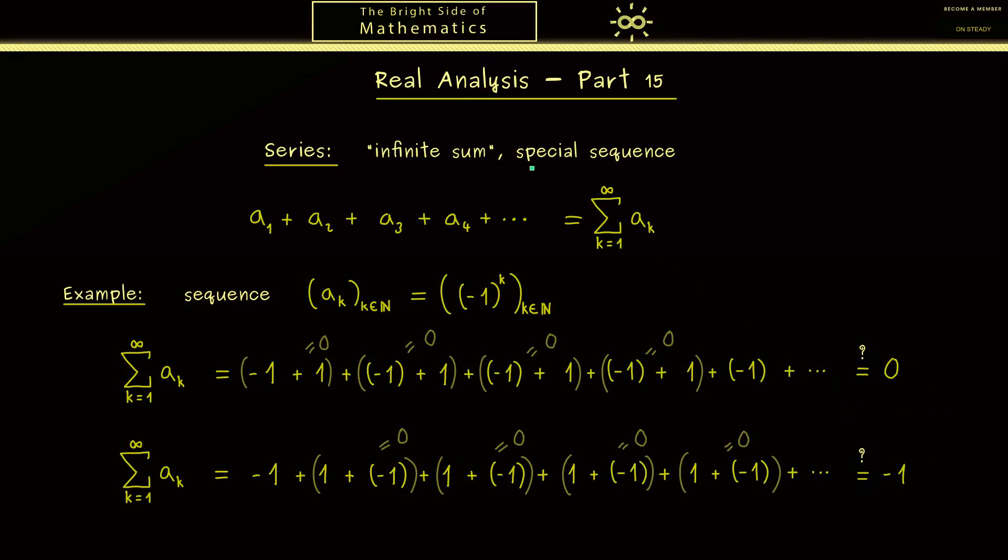So we immediately see such infinite sums here make problems. So we need to define them and they don't act like normal sums at all. Because in a normal sum we can set the parentheses as we want. And at the moment we don't know in which cases we are allowed to do this for an infinite sum as well.